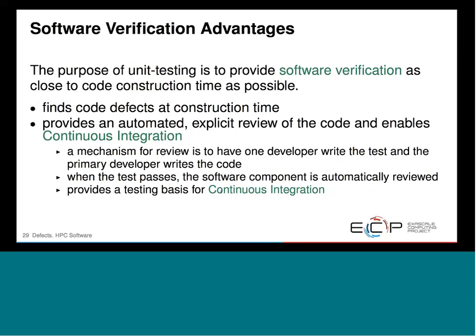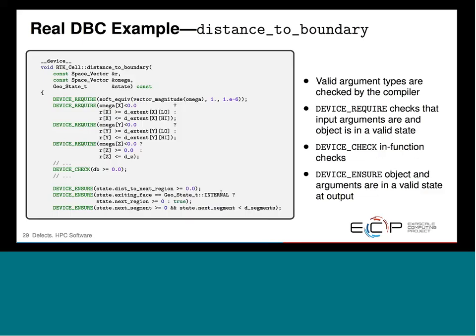Q&A: The distance-to-boundary condition example is powerful, but do you use documentation statements as readable contract information for functions? Is there a mechanism for pulling these out and making them part of the documentation?